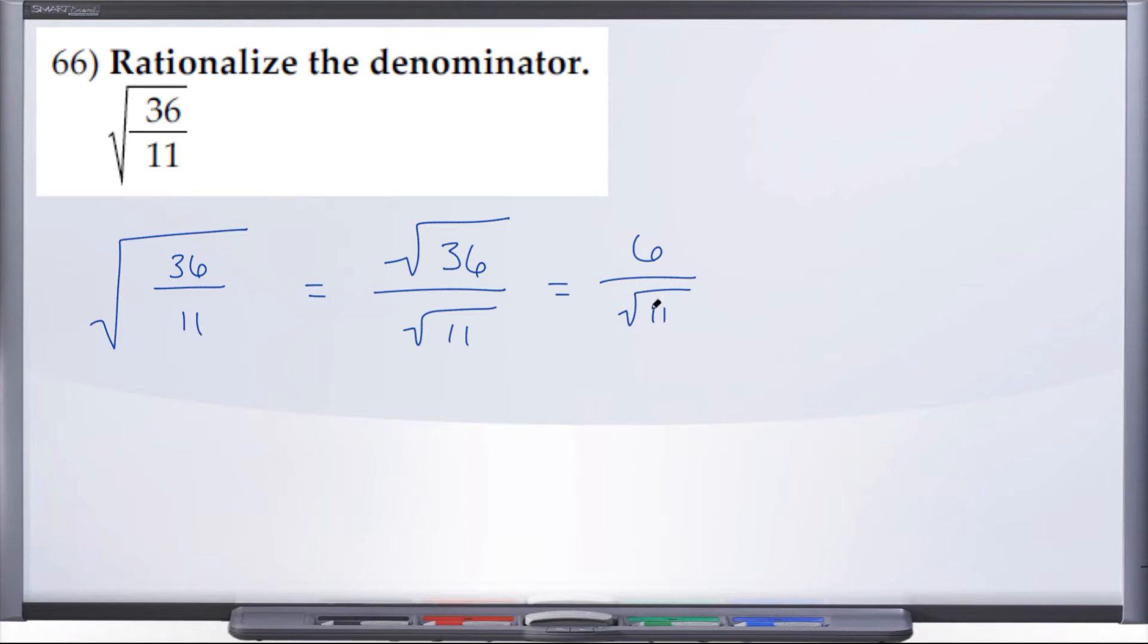But we really can't have a radical in the denominator, and so that's what it means to rationalize the denominator - means get rid of that radical.